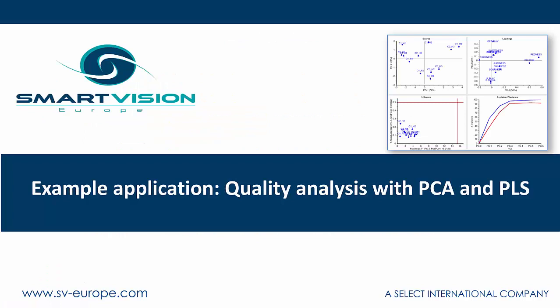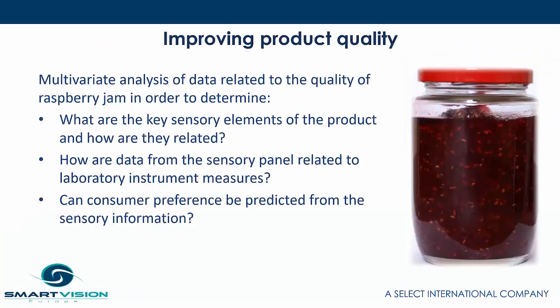In our example we're going to look at how we can use PCA and PLS, of which there are some very powerful capabilities within Unscrambler, to do some quality analysis against a food product — and the food product here happens to be raspberry jam.